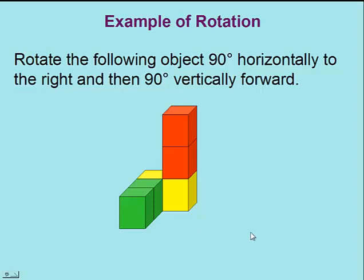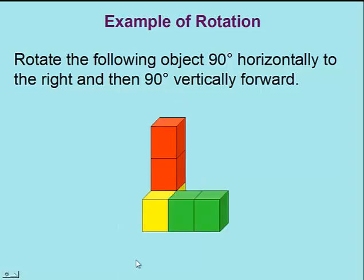First, we'll start with our 90-degree horizontal rotation. So the object, instead of pointing towards you, is now pointing toward the right.